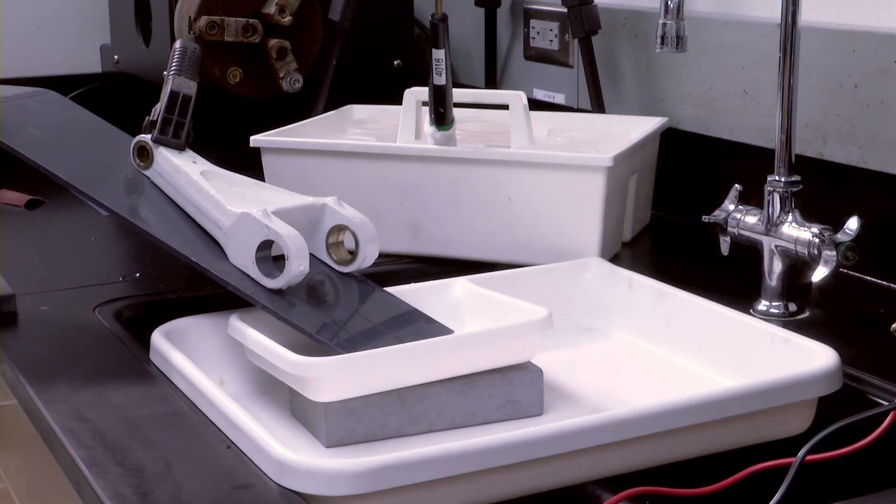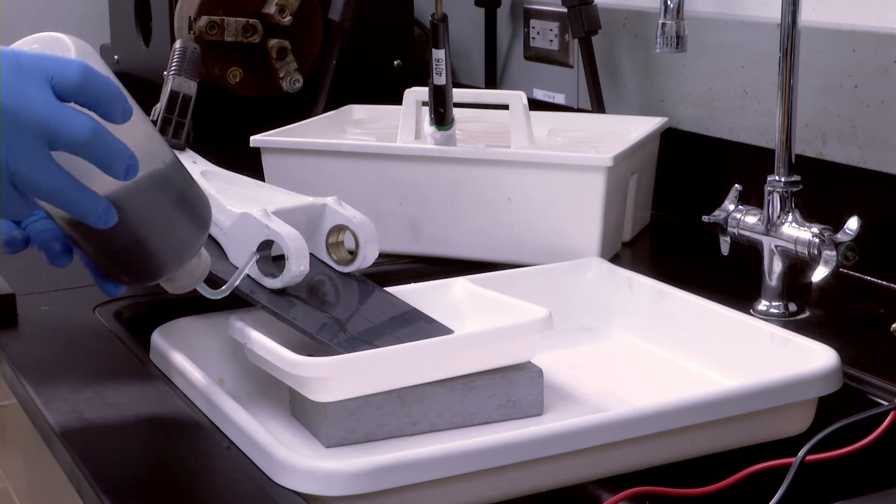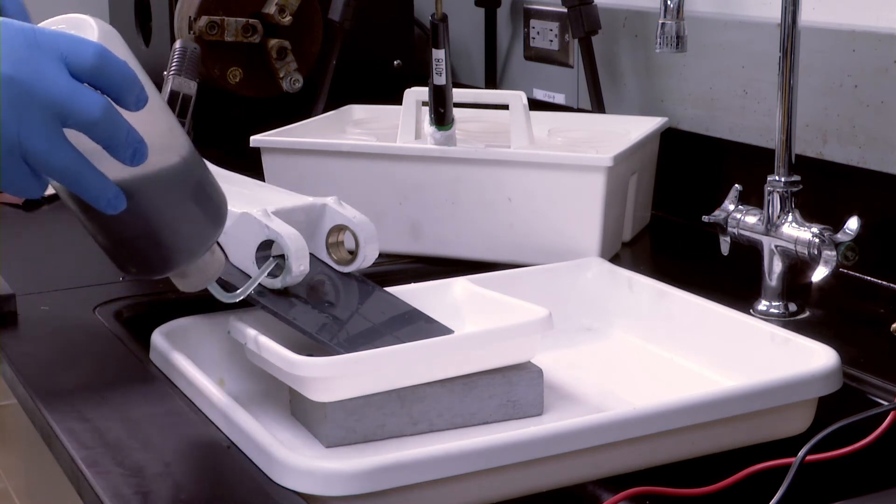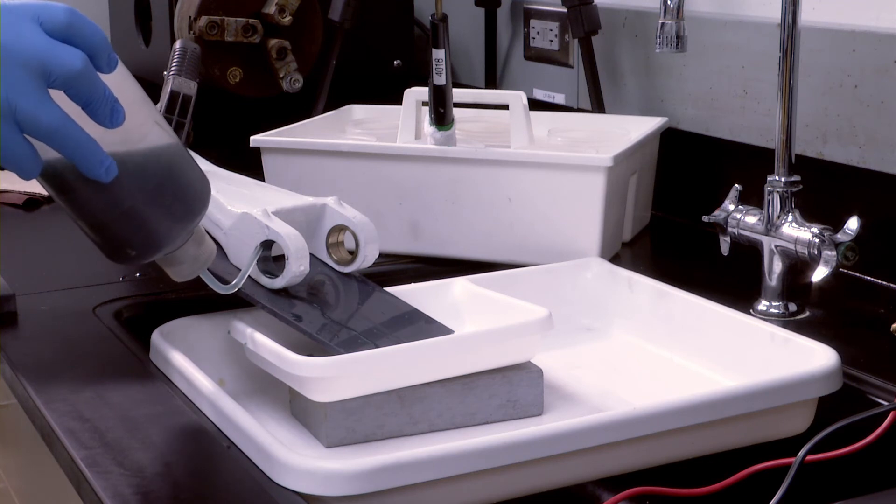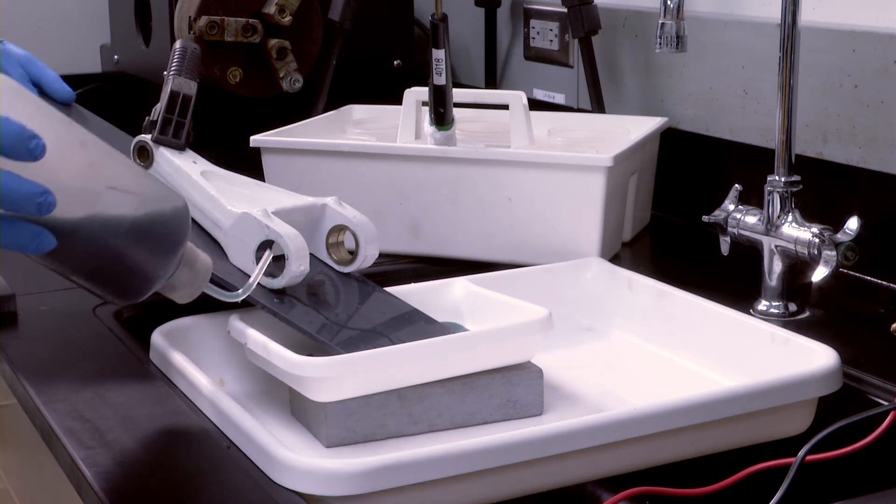The conversion coating is applied by using a squeeze bottle to gently flood the area and keep it wet for two minutes. Conversion coatings are very fragile as they form and should never be wiped or brushed during the application. Note that the conversion coating is captured to be recycled.